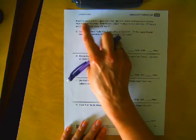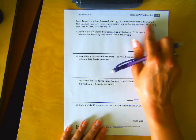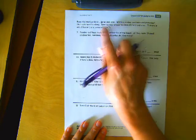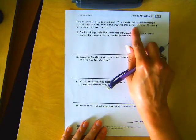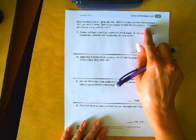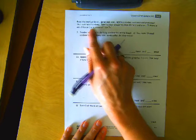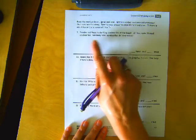Read the word problem, draw and label, write a number sentence and statement that matches the story. So it's R-D-W. Rewrite your answer to show its tens and ones. If there is only one ten or one one, cross off the S. Here we go.